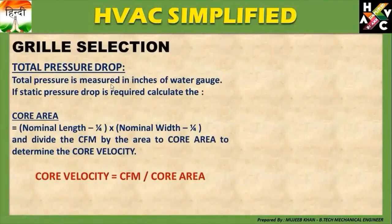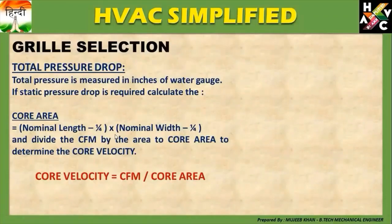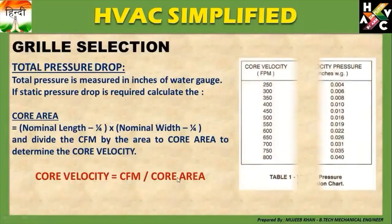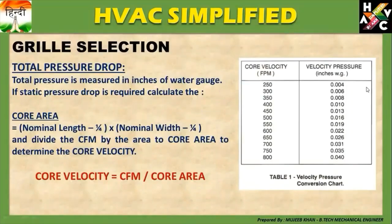Total Pressure Drop: Total pressure drop is measured in inches of water gauge। If the static pressure drop is required, calculate the core area। Core area = (Nominal Length − 1/4) × (Nominal Width − 1/4)। Then divide the CFM by the core area to get the core velocity। Core velocity find out करने के लिए required CFM को core area से divide करना होता है। Velocity-pressure conversion के लिए, based on the velocity यह pressure drops consider किये जाते हैं।